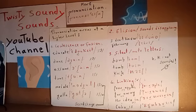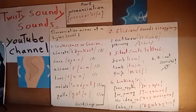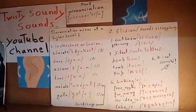Feature number two is what we call elision, or sounds disappearing — the disappearing of some sounds. For example, 'I don't know' — we say 'I don't know,' with the disappearing of the 't' sound. The 'k' is also a silent letter, and the 'n' in 'don't' — 'I don't know.' The second example is 'February' — instead of saying 'February,' we say 'February,' where the middle syllable disappears.